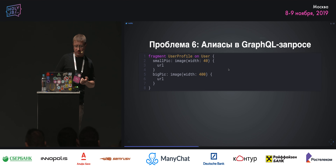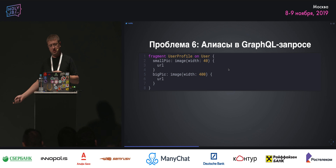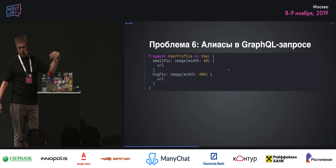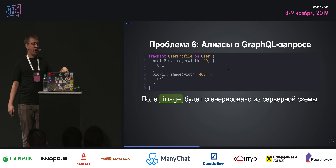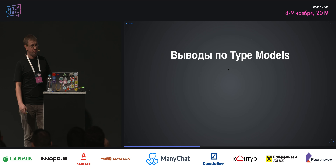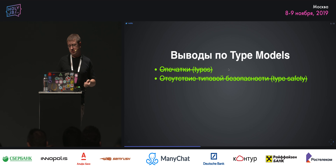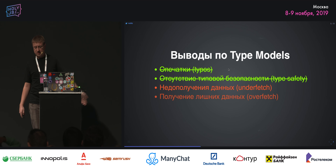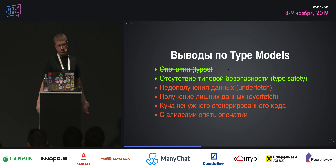Также в GraphQL запросах есть возможность использовать алиасы — поля с аргументами, когда можно запросить не просто картинку, а ссылку на картинку с 40 пикселями или с 400 пикселями, обозвав их small_peak и big_peak — всё в рамках одного запроса. Поле image сгенерируется с серверной схемы, а small_peak и big_peak надо дописывать руками. Выводы по type models: опечатки решаются, типовая безопасность тоже. Но осталось недополучение и получение лишних данных, плюс появился новый ненужный код и проблема с алиасами.